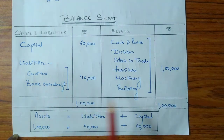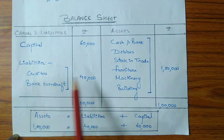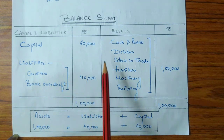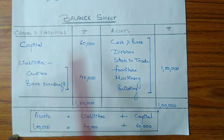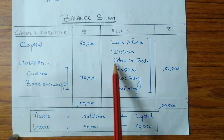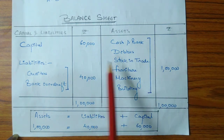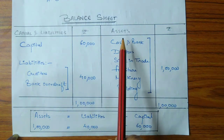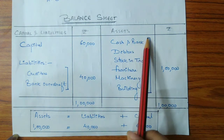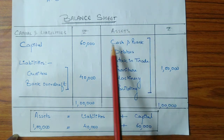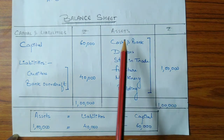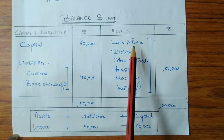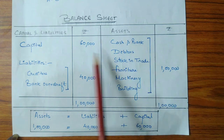Before understanding the accounting equation it is important to know about the balance sheet. The balance sheet is prepared to know the financial position of the business. In its format, assets are recorded on the right-hand side and capital and liabilities are recorded on the left-hand side. Assets are anything which can be converted into cash, or the benefit of which a company can get in the future.